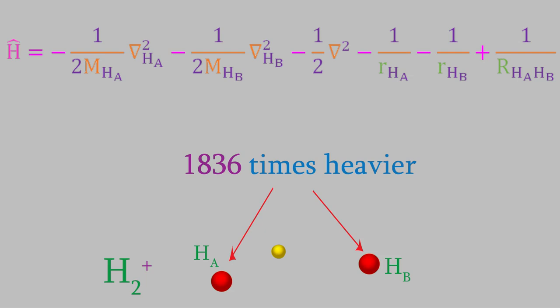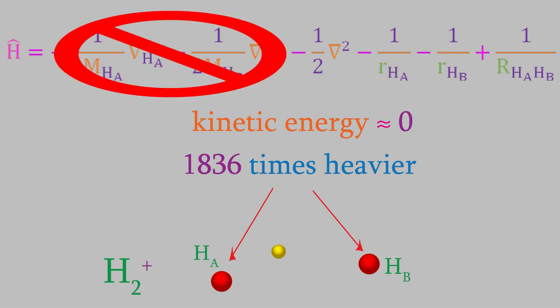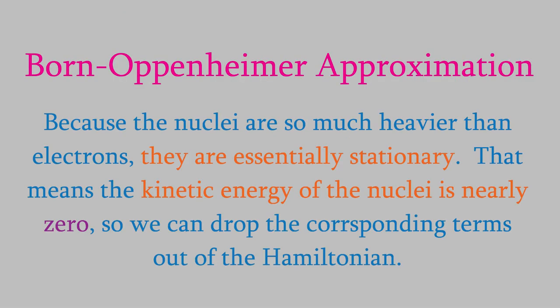But wait — that means the kinetic energy of a nucleus is nearly zero. That means we can drop those terms out of our Hamiltonian. That's true for every Hamiltonian for a system with more than one nucleus. We usually drop out the kinetic energy terms for the nuclei because their kinetic energy is so much smaller than it is for the electron.